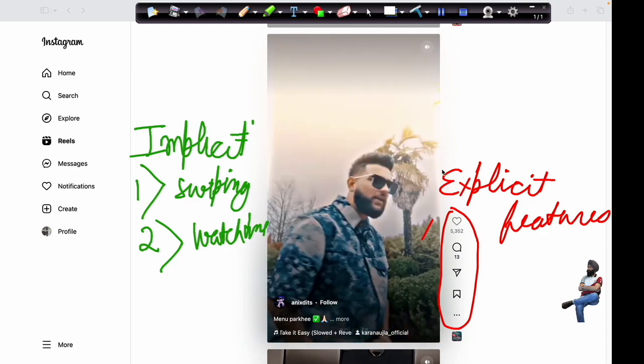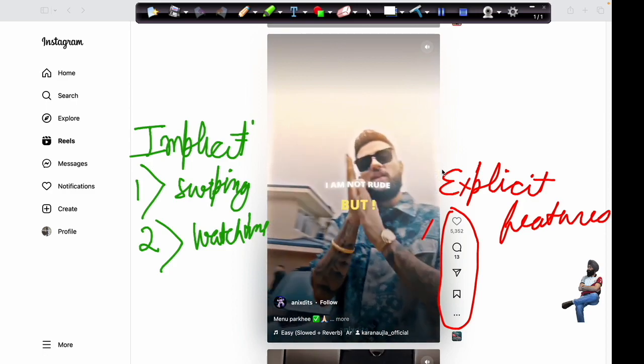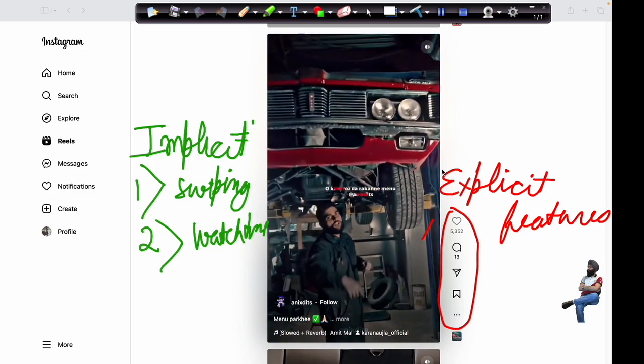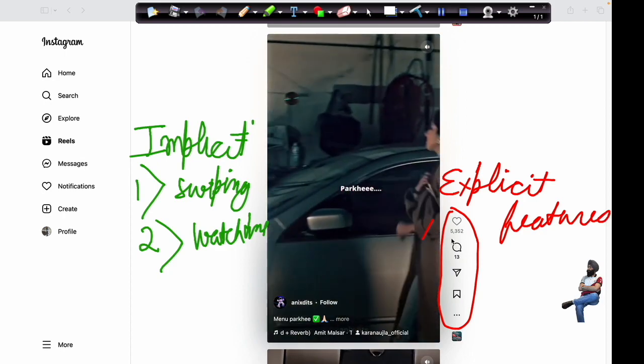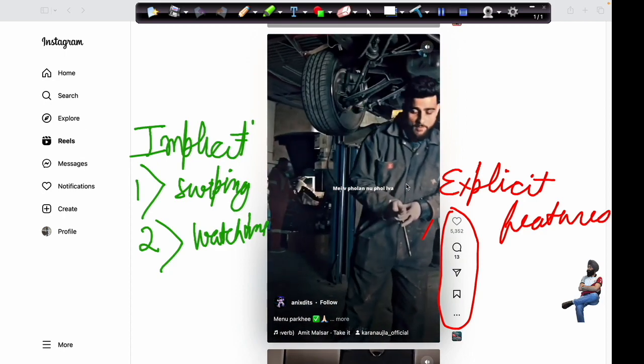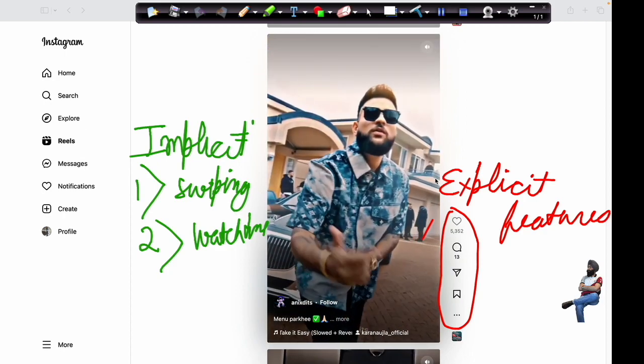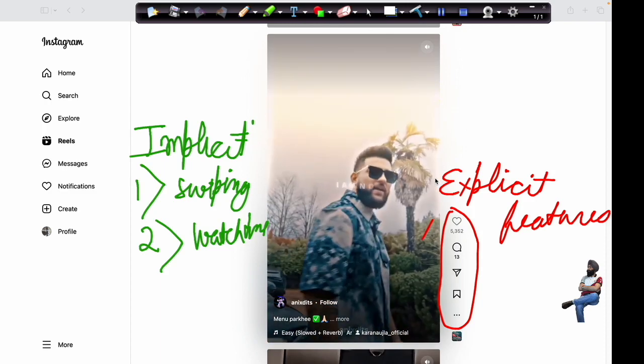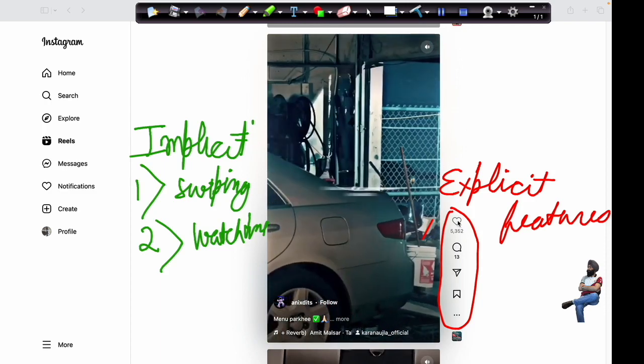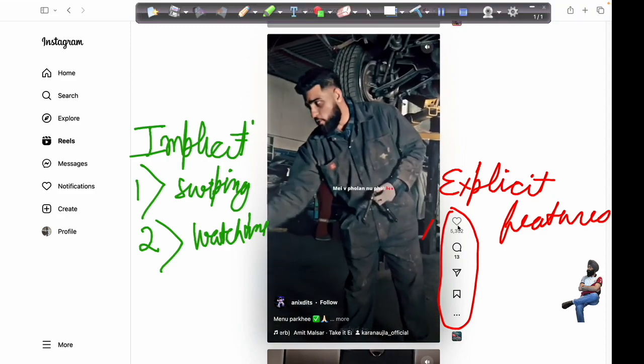To begin with, there are two kinds of features which are important for recommendations. First are explicit features and second are implicit features. Explicit features are generated from explicit user interactions.